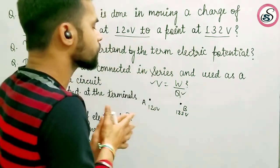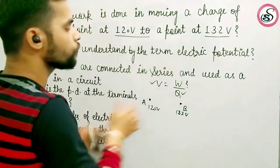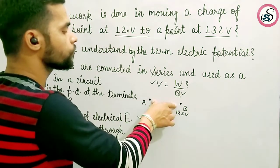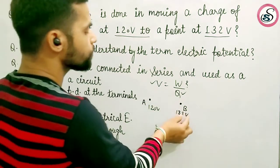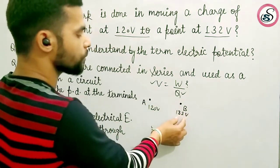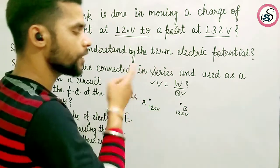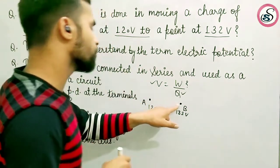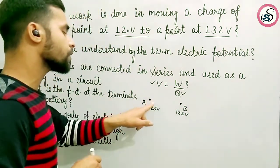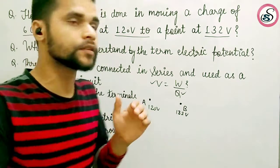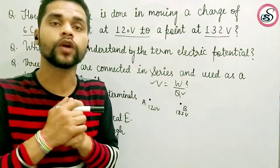The 6 coulomb charge will move from point B to point A, because point B is at higher potential in comparison to point A. So here, from B to A for the 6 coulomb charge, we will calculate the work done.